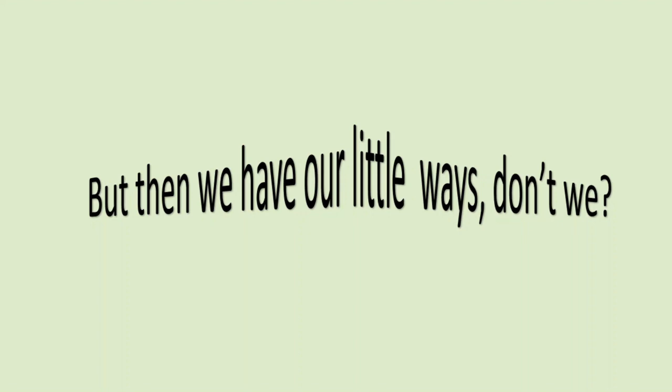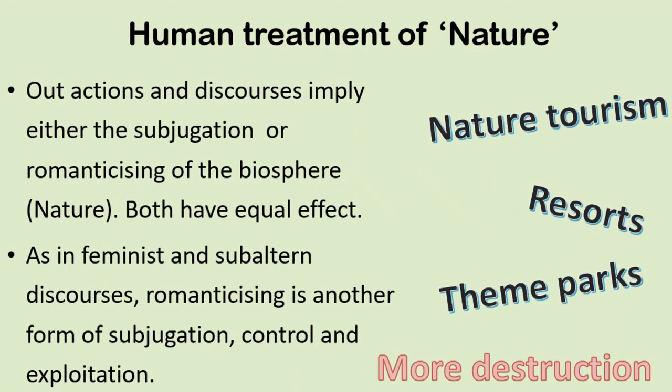But then we have our little ways to be miserable even in the best of times. We are talking primarily about the binary between human and natural forms, and the way we treat nature has been in two ways: either we talk about conquering nature with our huge machines, or we talk about it in romantic terms — beauty, nature, etc. As it has happened in feminist and subaltern discourses, when we say that woman is wonderful and the source of all goodness, that is also a way of subjugating and controlling her. Both the brutal subjugation and this subtle form of such control are equally bad, and that is what we have been doing to nature.